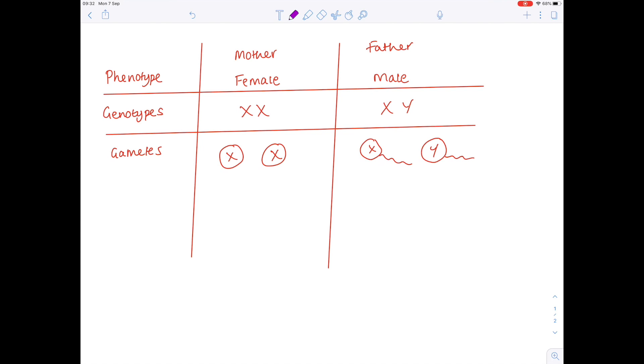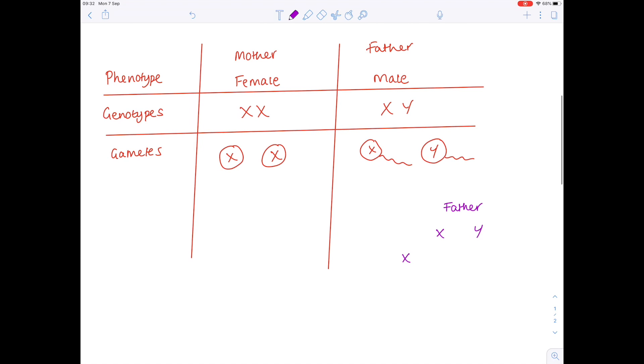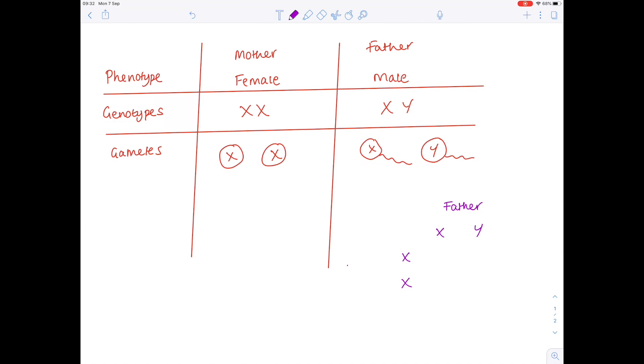So if I was to draw a Punnett square down here, there are the gametes from the father and here are the gametes from the mother. And if we cross them, child number one will be female, child number two will be male, child number three will be female again and child number four will be male. And that's how you end up with a 50-50 chance of your baby being male or female.